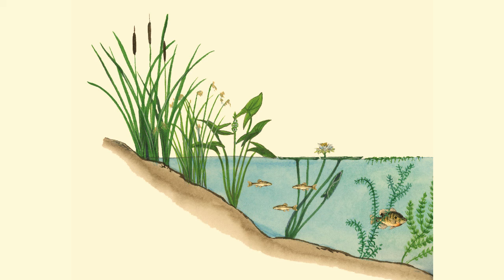Sunlight can only penetrate so deeply into the water of a lake. Where sunlight reaches the bottom, rooted plants can grow. This is called the littoral zone and is often the area of the lake from the shoreline outward to the point where sunlight no longer reaches the bottom. This is like a narrow band or strip reaching out from the shoreline and islands. These bands of plants hold the greatest variety of life, or biodiversity, to be found in the lake ecosystem.